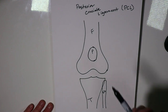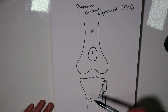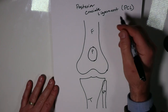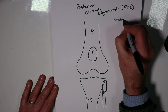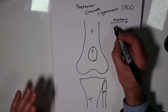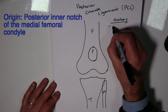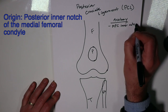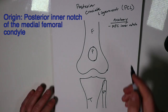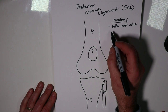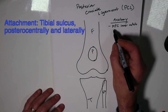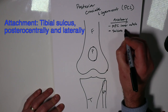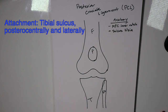I've drawn my standard left knee that I tend to use — we've got our femur, our tibia, our fibula, and patella. The anatomy of the PCL starts on the inner aspect in the notch of the medial femoral condyle, on the inner aspect of the notch, and a little on the posterior half. It runs to the sulcus of the tibia, which is a little posterior centrally.